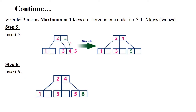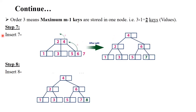Next, insert 6: insert 6 after 5. Next, insert 7: insert 7 after 6, but it becomes overflow because one node stores only two values. The middle node 6 becomes the root of that subtree and goes up to the parent — but now the parent node contains 2, 4, and 6, which violates the property. So again we split: the middle node is 4, so 4 becomes the root, with 2 and 6 as children. After inserting 8, the tree is updated accordingly.